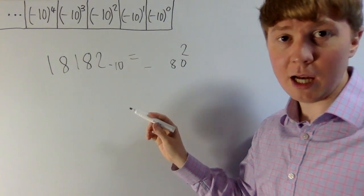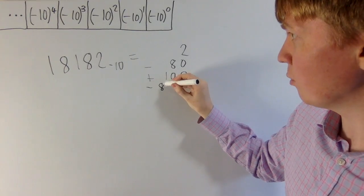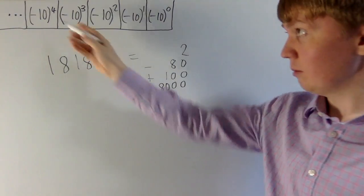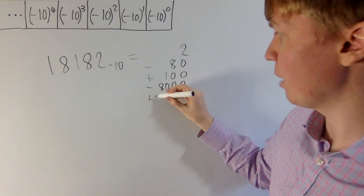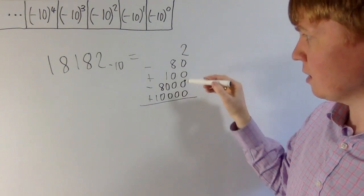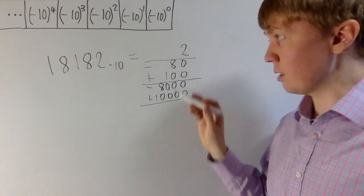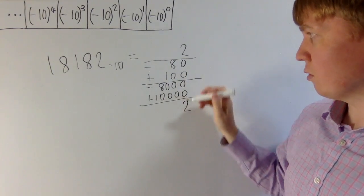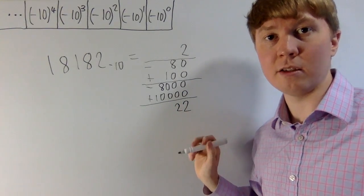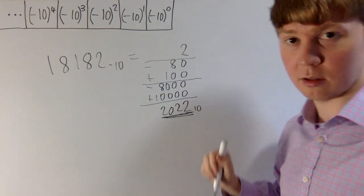Then this 1 — minus 10 squared is 100 — so this gives us a positive contribution of 100. We get this alternating structure of positive and then negative contributions. Our final 1 lot of 10,000 is still positive because it's minus 10 to the power of 4. So to convert into base positive 10, we do 2 minus 80 plus 100 minus 8,000 plus 10,000. Grouping into pairs: 2, plus 100 minus 80 gives 20, plus 10,000 minus 8,000 gives 2,000. So this number is actually worth 2,022.